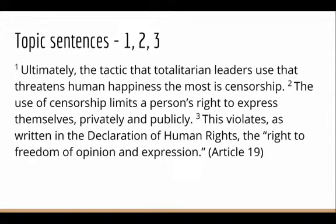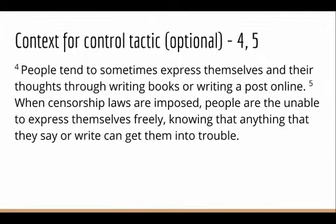She also tells us what the tactic does to people's happiness — she says it limits their right to express themselves. So your topic sentence lays out the argument for your whole paragraph, and it should say a tactic, a violation of human rights, and an impact on human happiness. In sentences four and five, she gives the context for her control tactic, and this is optional, but it helps us understand exactly what censorship is and why it matters.